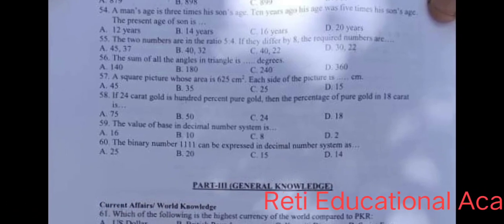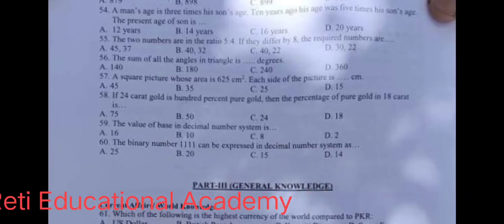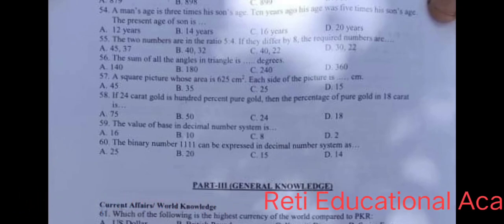Question number 60: The binary number 1111 can be expressed in decimal number system as, and the correct answer is C, 15.